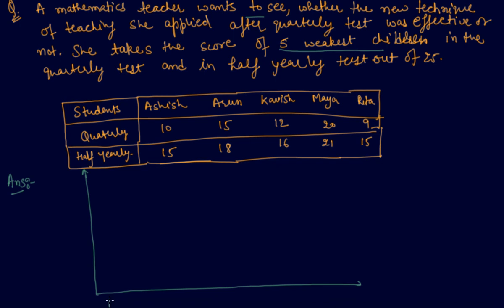So we have to draw a bar graph depicting the marks of 5 weakest students. I will write Ashish here, Arun, Kavish, Maya, Rita. So I have to choose the scale very wisely. Students, I will see the range of the numbers.